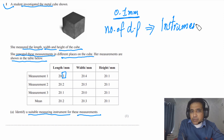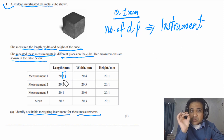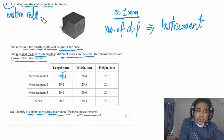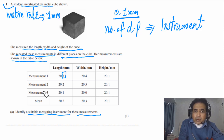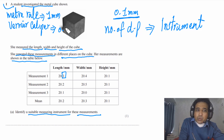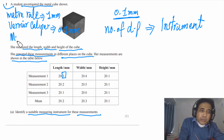Number of decimal places is linked with the instrument. We have 1 dp, so we need to find which instrument can measure up to 0.1 mm. The meter rule has a precision of 1 mm, so it is not suitable here. The vernier caliper has a precision of 0.1 mm, so we can use the vernier caliper.